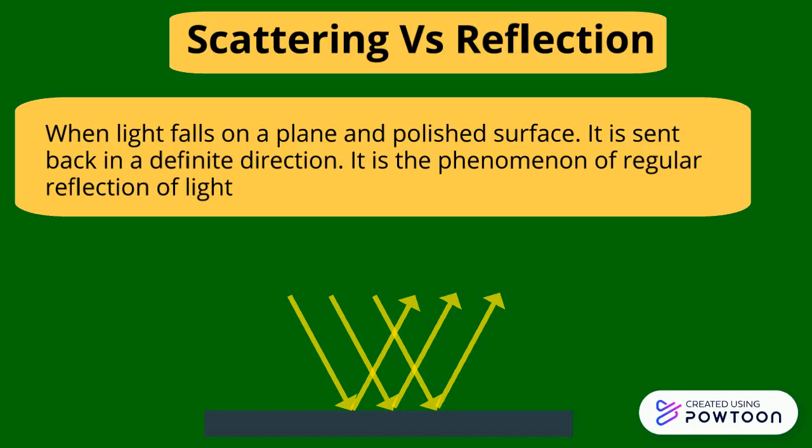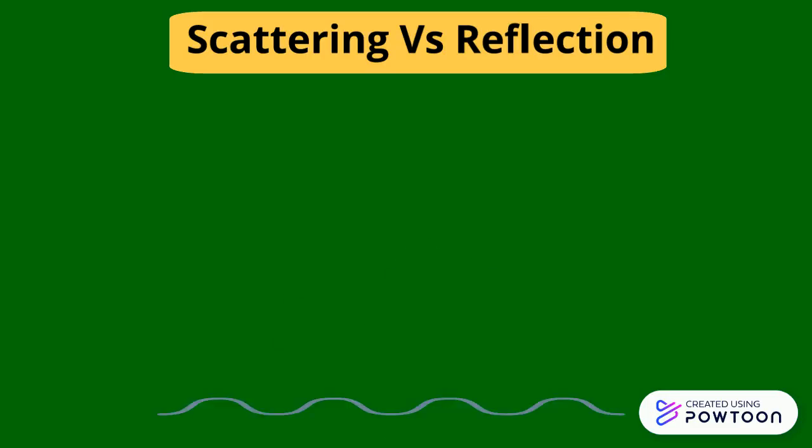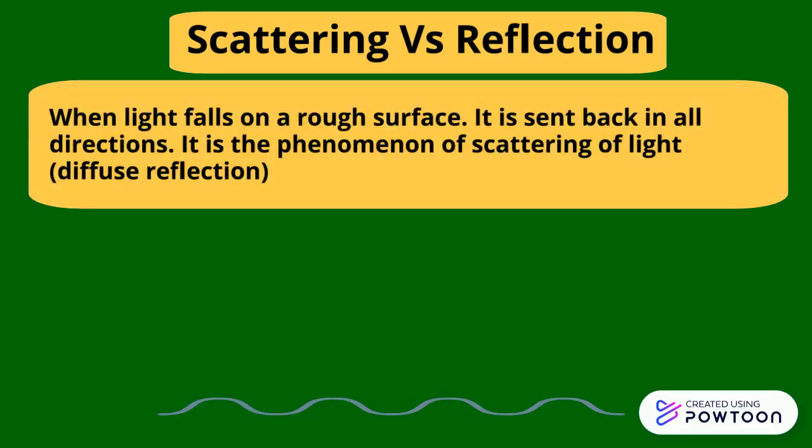Note that when all the rays falling on the smooth surface are parallel, the reflected rays are parallel as well. When light falls on a rough surface it is sent back in all directions. It is the phenomenon of scattering of light, also known as diffuse reflection of light.